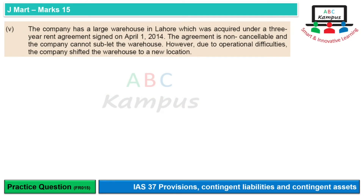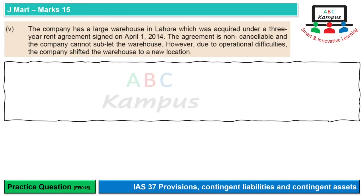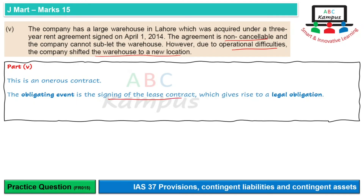Next point: Company has a large warehouse in Lahore acquired under a three-year rent agreement signed on April 1, 2014. The agreement is non-cancellable — yeh typical case hai non-cancellable lease ka, jise hum onerous contract bhi kehte hain. Company cannot use the warehouse; due to operational difficulties the company shifted to a new location, na kisi aur ko rent de sakte hain na lease cancel kar sakte hain. Hum rent pay karte rahenge bina koi benefit liye. Contract sign karne ki waja se humara ek legal obligation arise hoti hai aur provision recognize karni chahiye — unavoidable rent payments ki, aur agar rent payments long term hain toh unki present value calculate karke recognition hogi.